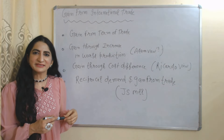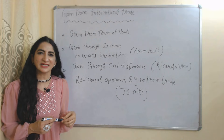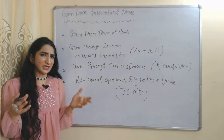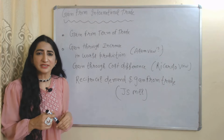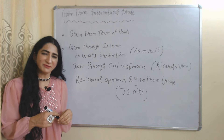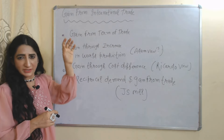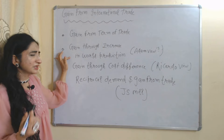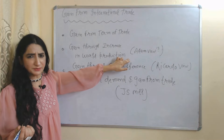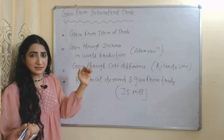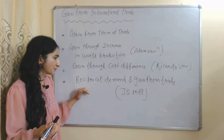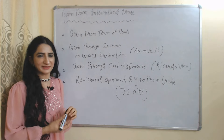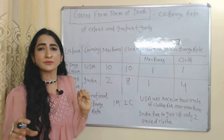Hello everyone, my name is Mini Sechi. I hope you all are staying healthy. Today we are going to talk about gain from international trade. Gain from international trade are the benefits that we receive when we do international trade. It is mainly divided into four parts: gain from terms of trade, gain through increase in world production (Adam Smith's views), gain through cost differences (Ricardo's views), and reciprocal demand and gain from trade (J.S. Mill's views).